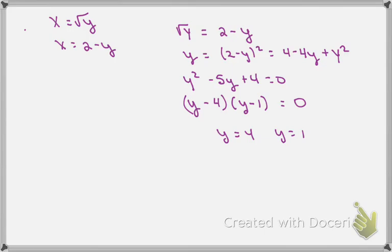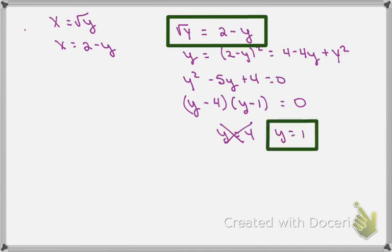From the original equation up at the top that we were using to try to find the intersections, we see that the left-hand side is the square root of y. So that means that our solution, y equals 4, won't work because 2 minus 4 is negative 2, and the square root of a number can't be negative. So the only value that's left is y equals 1. So we see now that there's intersection at y equals 1.